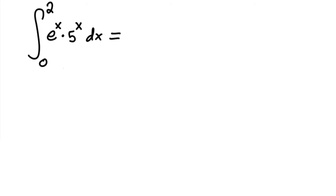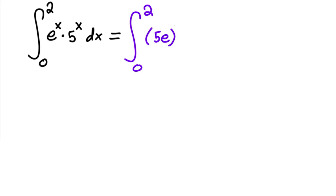This next one at first glance looks incredibly confusing — how could you find the antiderivative of a product with what we know so far? But there's a little workaround. You can rewrite e to the x times five to the x as five e, all to the x. This is exactly the same thing.